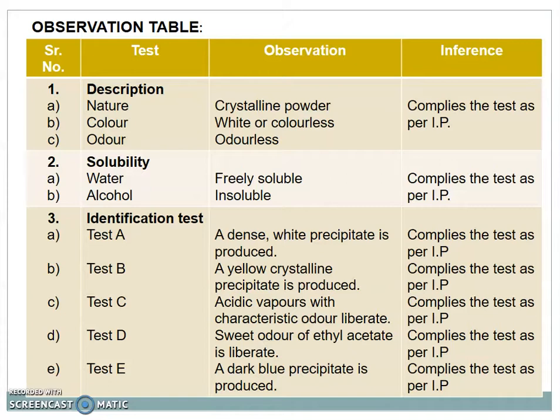Identification tests which are already performed: Test A, observation is a dense white precipitate is produced, that means it complies the test as per IP. Test B, a yellow crystalline precipitate is produced, complies the test as per IP. Test C, acidic vapors of characteristic odor is liberated and this odor is of ethyl acetate, complies the test as per IP. Test D, sweet odor of ethyl acetate is liberated, complies the test as per IP. And Test E, a dark blue precipitate is produced, complies the test as per IP.